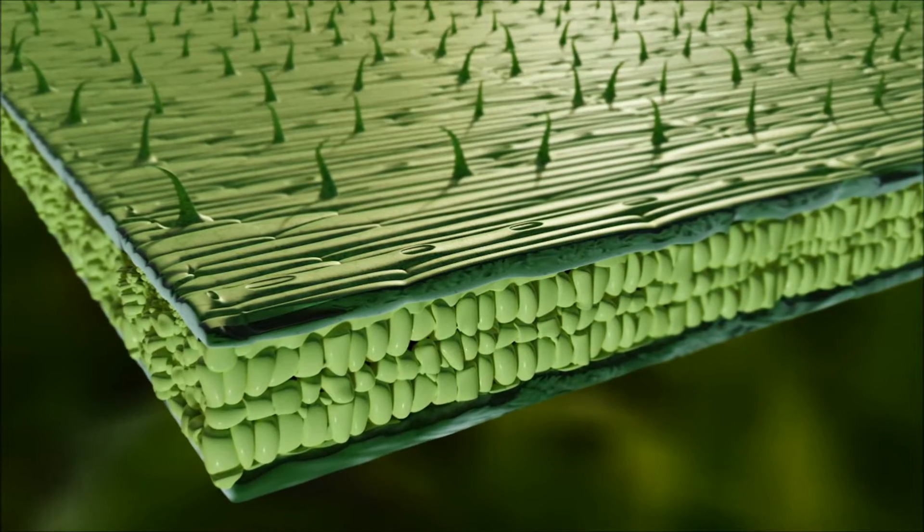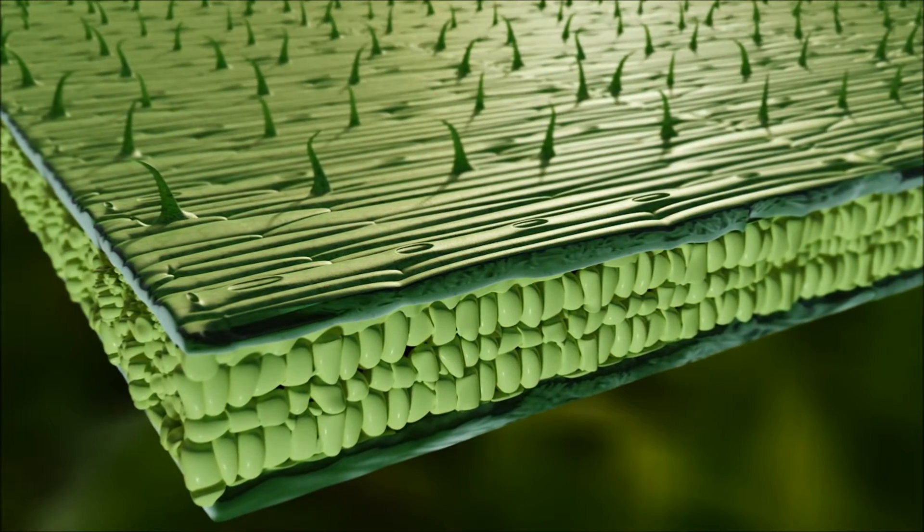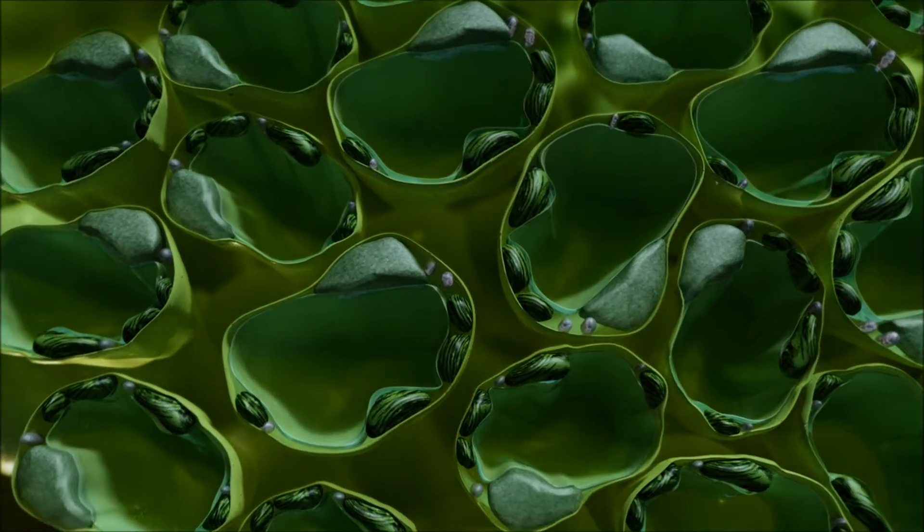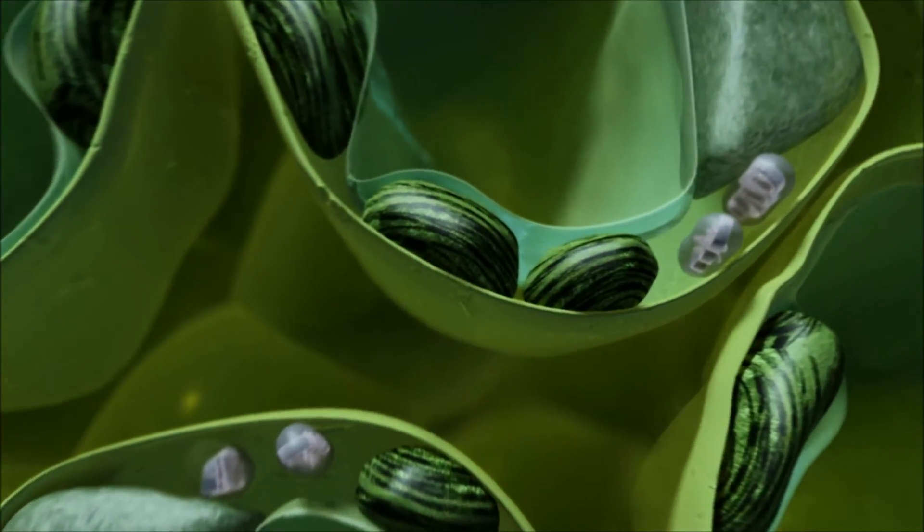Cells inside the leaf contain chloroplasts, specialised cell subunits that help to produce glucose, an essential building block of plant growth and grain yield.